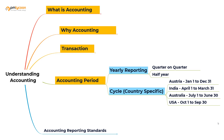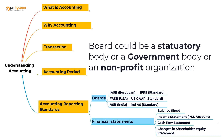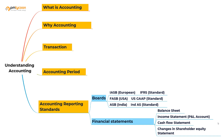Different accounting periods exist because every country has different accounting standards that companies must report against, as defined by a board. A board is a statutory body, government body, or non-profit organization set up to establish certain standards and financial accounting practices that companies in their countries must adhere to.